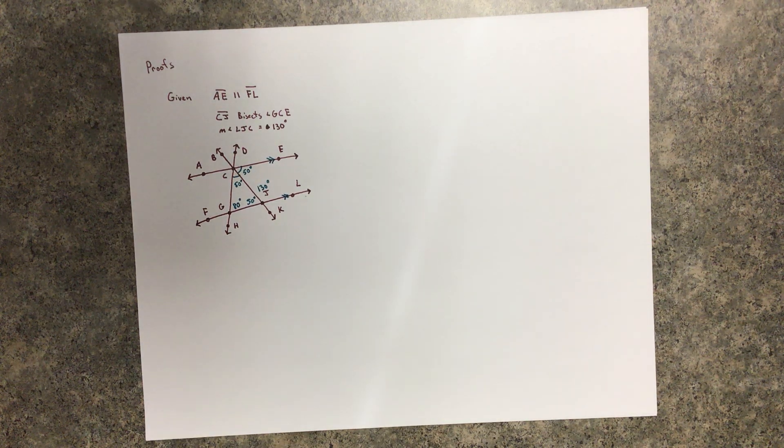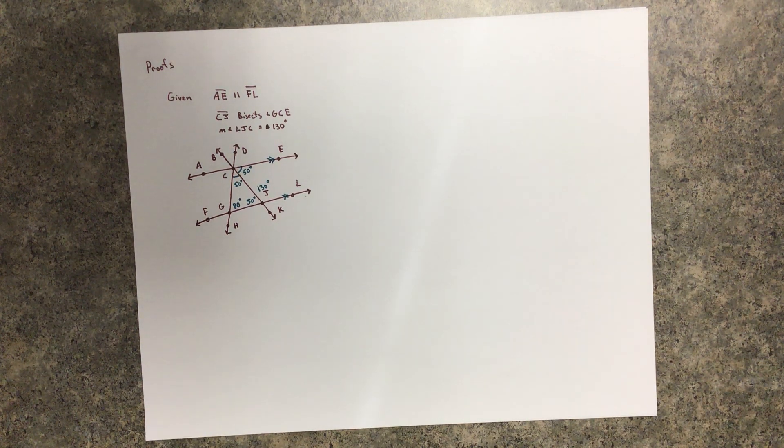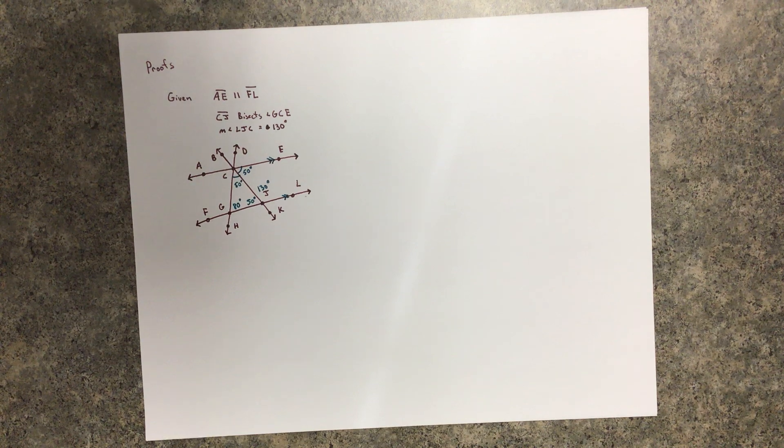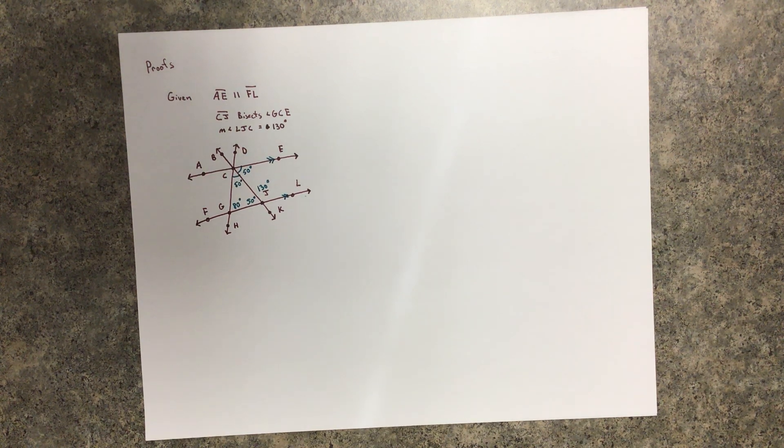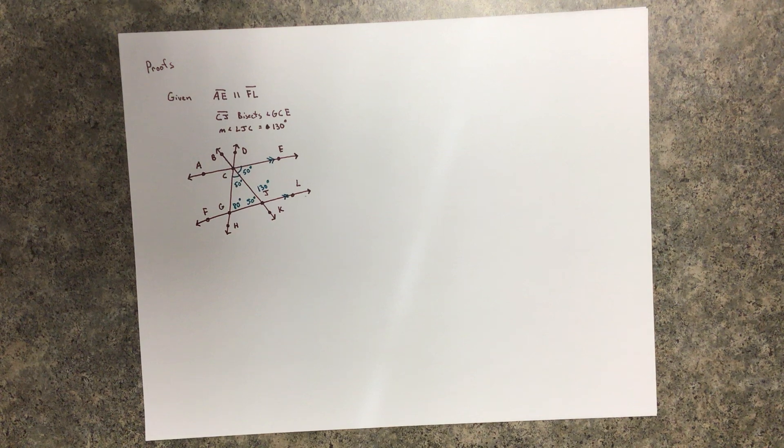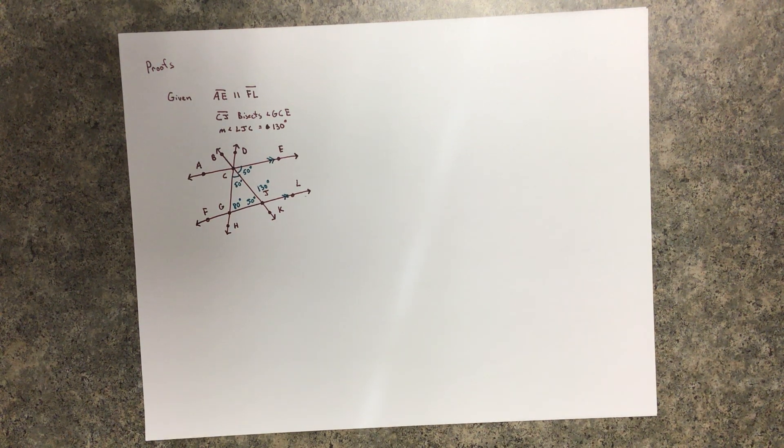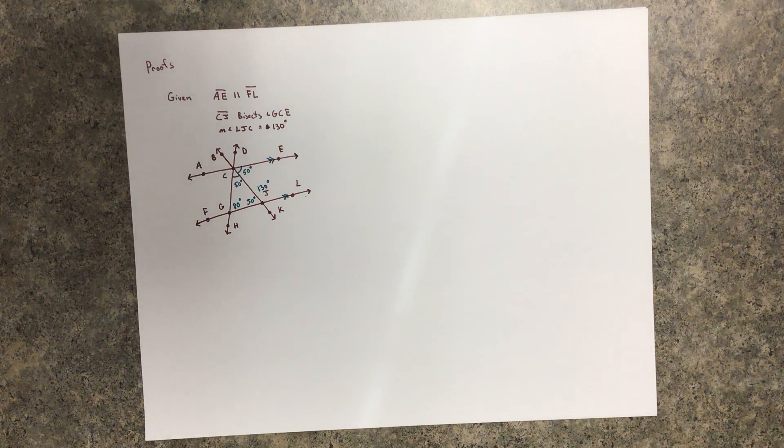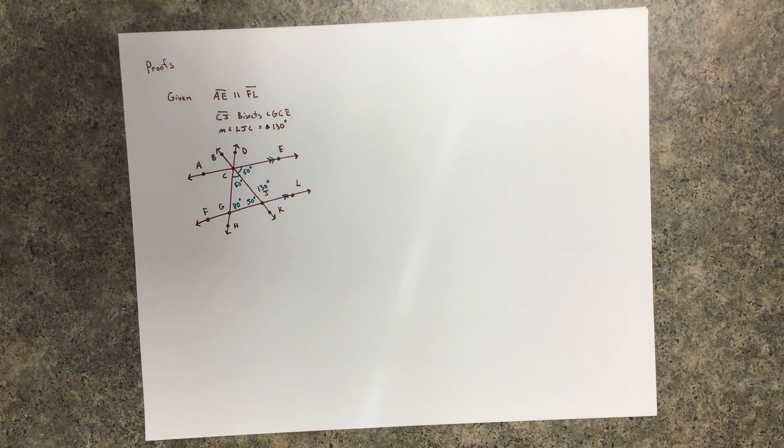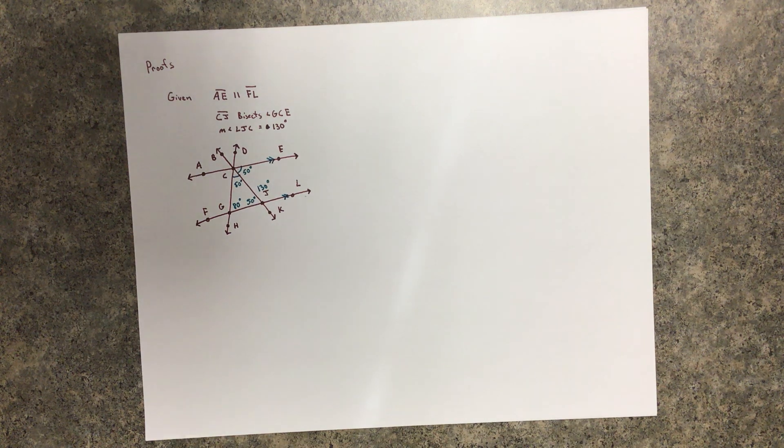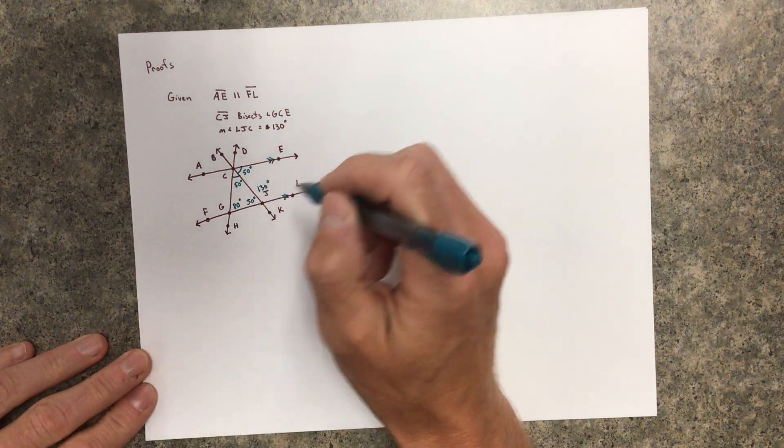Actually, I'm not even sure I even told you what I wanted you to find. That's kind of silly. What was the goal here? The goal was to prove HGJ. We wanted to prove HGJ.